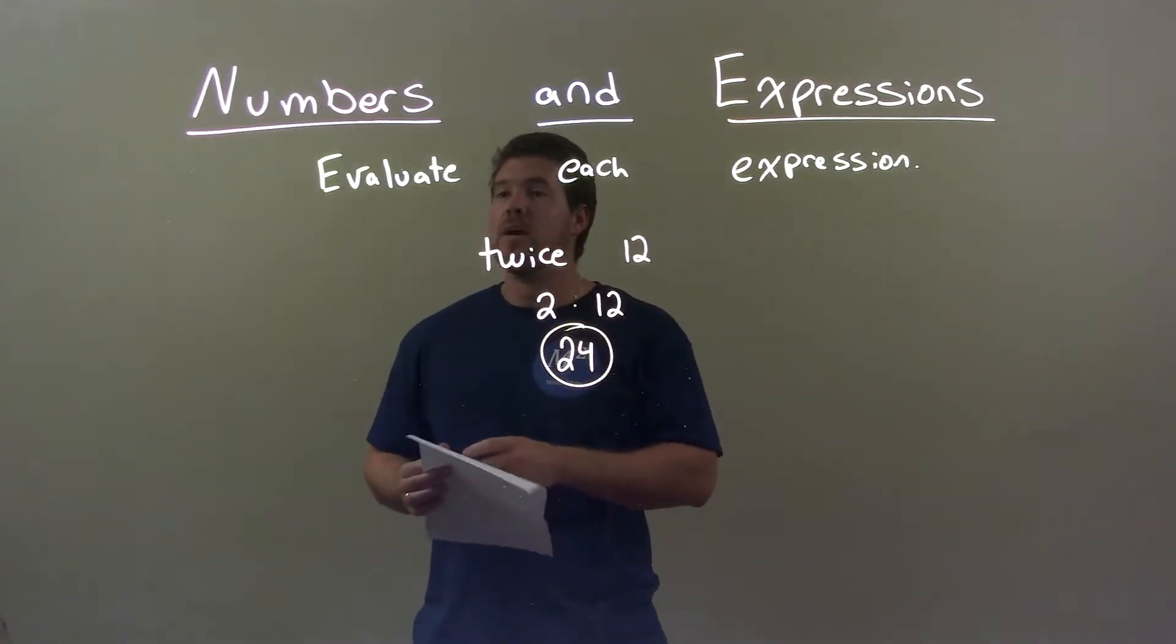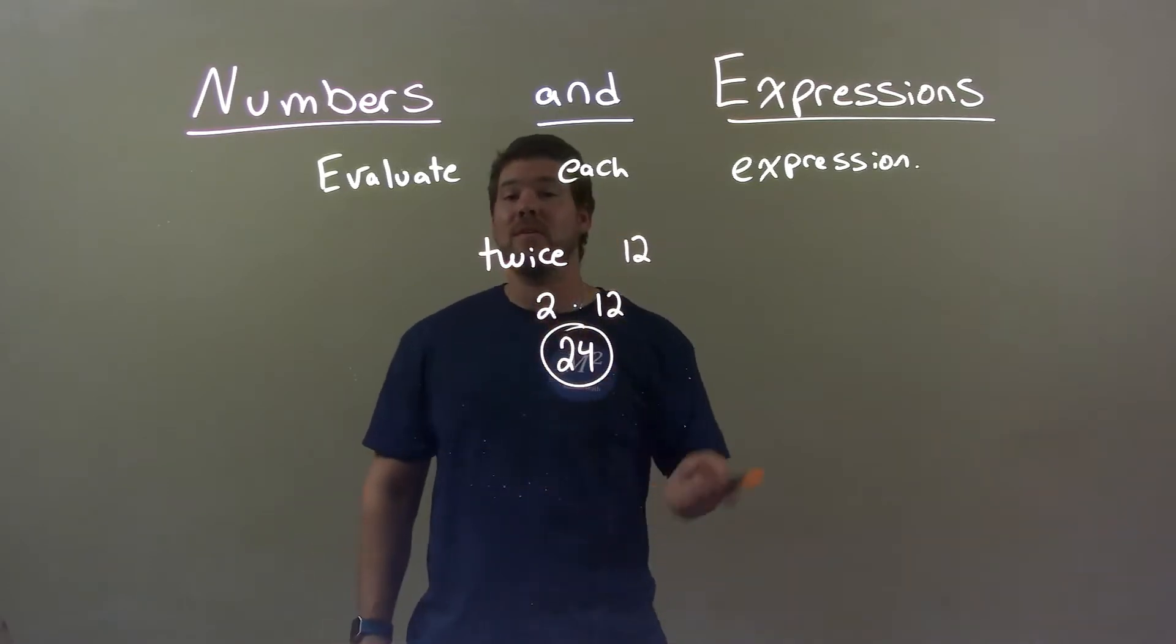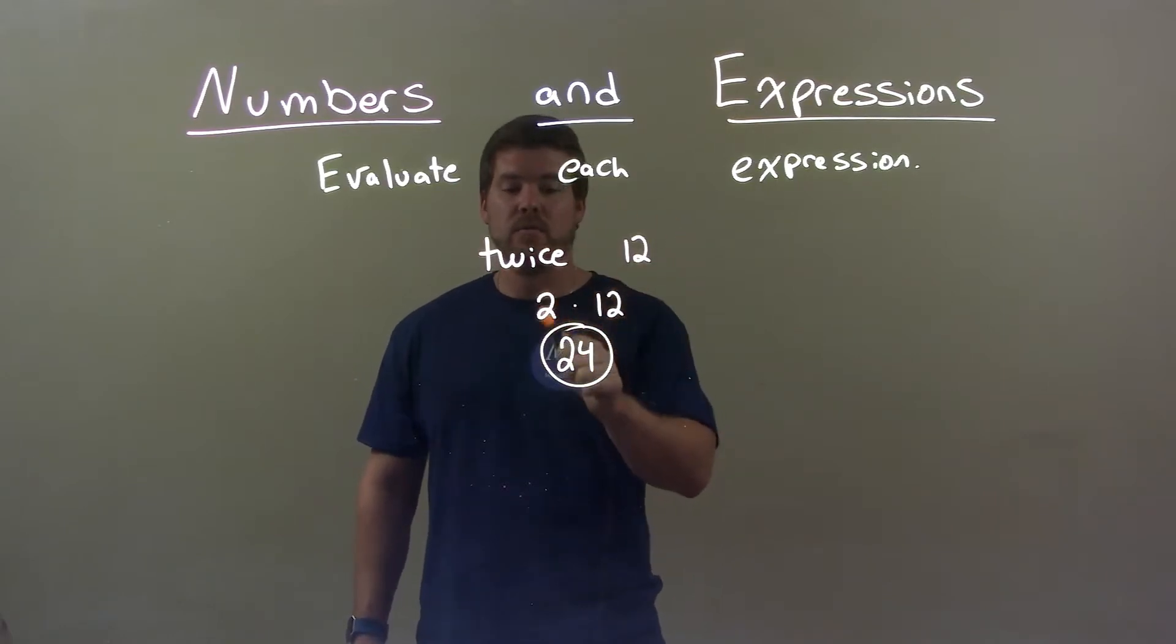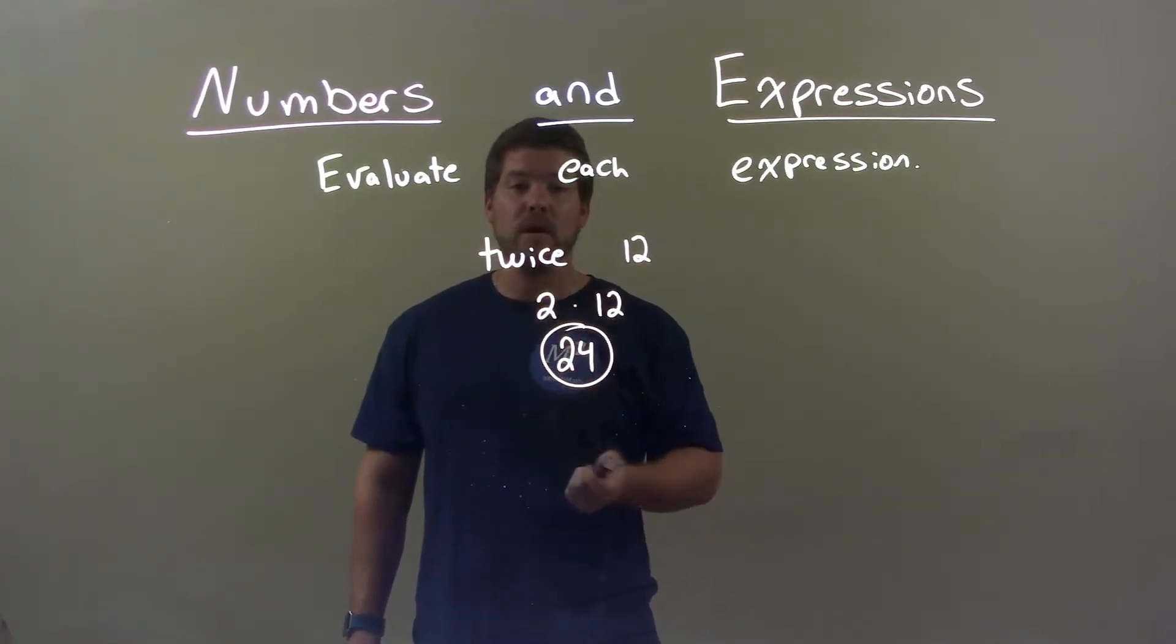So quick recap: we're given twice 12 and we have to evaluate that. Twice is 2 times something, so 2 times 12 right there. And then 2 times 12 is 24. So again, our final answer is just 24.